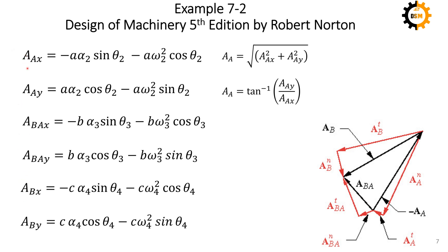Now that we have the x and y components of each vector, we find the magnitude using the square root of the sum of squares. To find the angle or orientation of a vector, we use the inverse tangent equation. Inserting the two components already calculated for point A, the acceleration of point A comes out to be 25.000117 m/s².